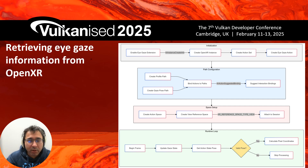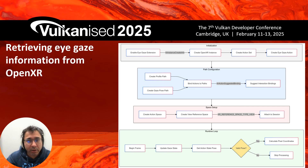At each frame during the runtime render loop, we call XR BeginFrame as mentioned previously, update the gaze state, and then query whether the action state position is valid. If it is valid — meaning the device has a stable position — we use that to calculate where the user is looking in pixel coordinates. This tells us which pixel coordinates to pay more attention to and shade at a higher rate compared to other pixels.